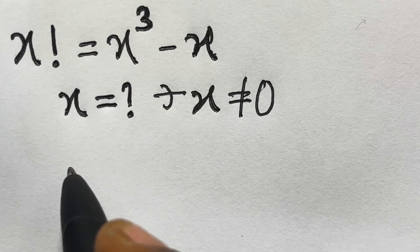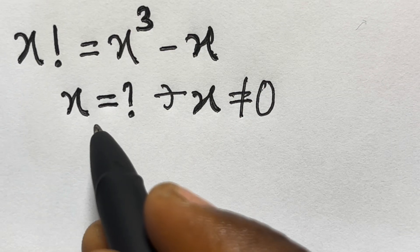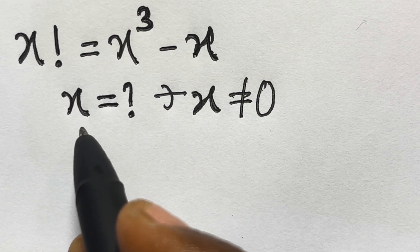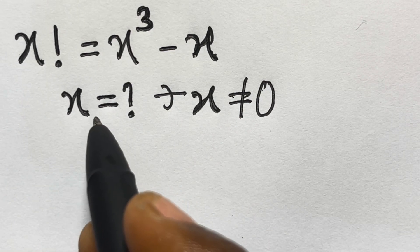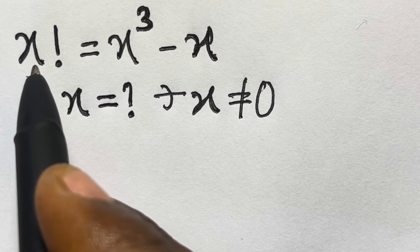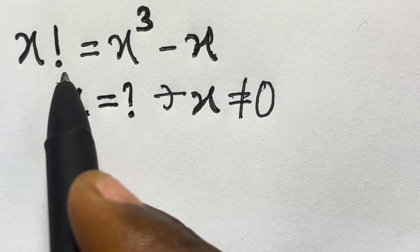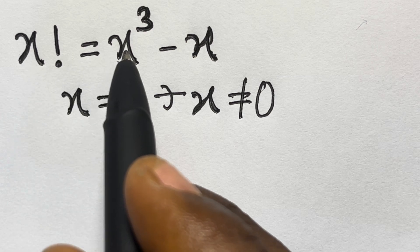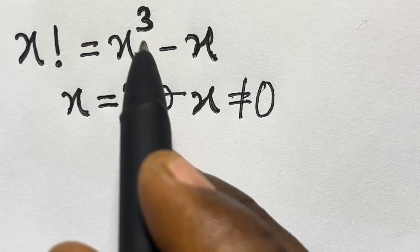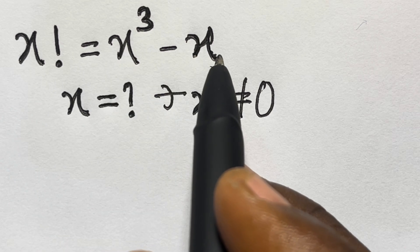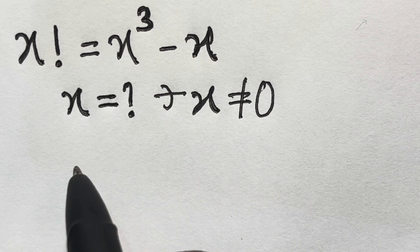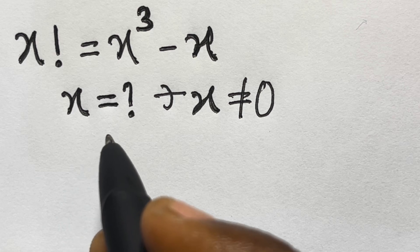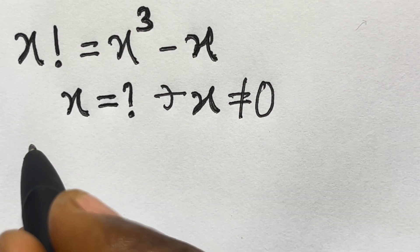Hi, welcome to mathematics. In this video, we want to solve for x in x factorial equals x raised to the power 3 minus x. Let's see a solution.